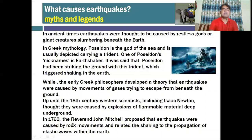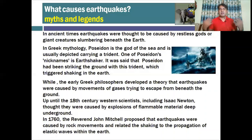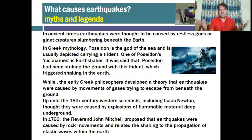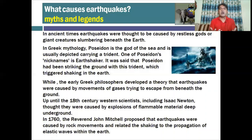Up until the 18th century, Western scientists including Isaac Newton thought earthquakes were caused by explosions of flammable material deep underground. Then in 1760, John Michell proposed that earthquakes were caused by rock movements and related shaking to the propagation of a plastic wave within the Earth's crust. He said that since our Earth is based on rocks, these rocks start to move, and because of the movement of the rocks, seismic waves or sound start to generate, and because of that the earthquakes occur. These were some of the historical ideas regarding earthquakes.